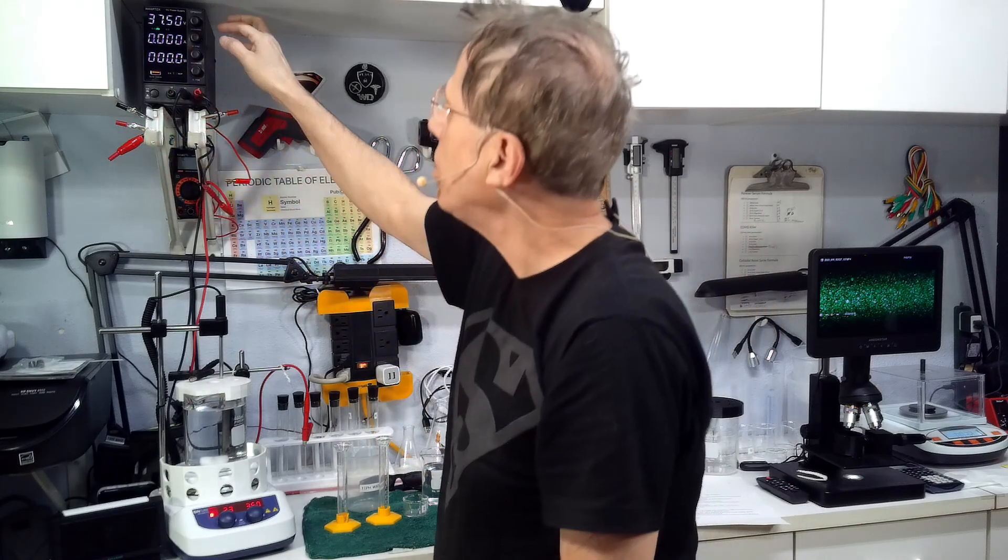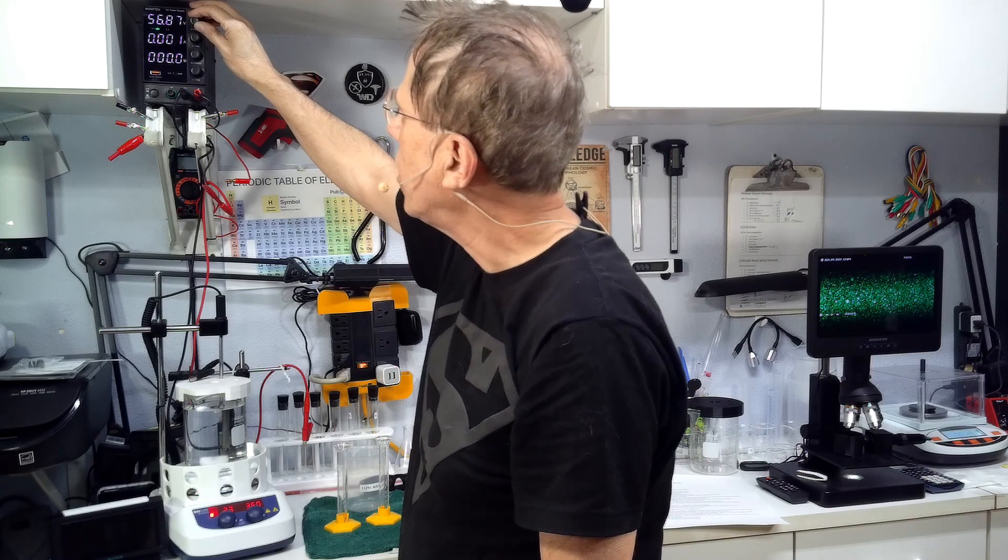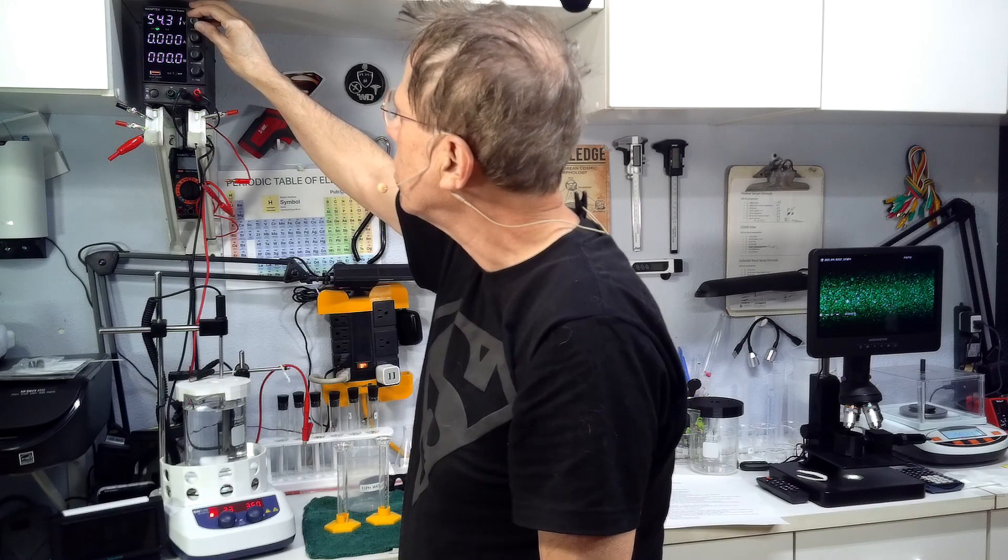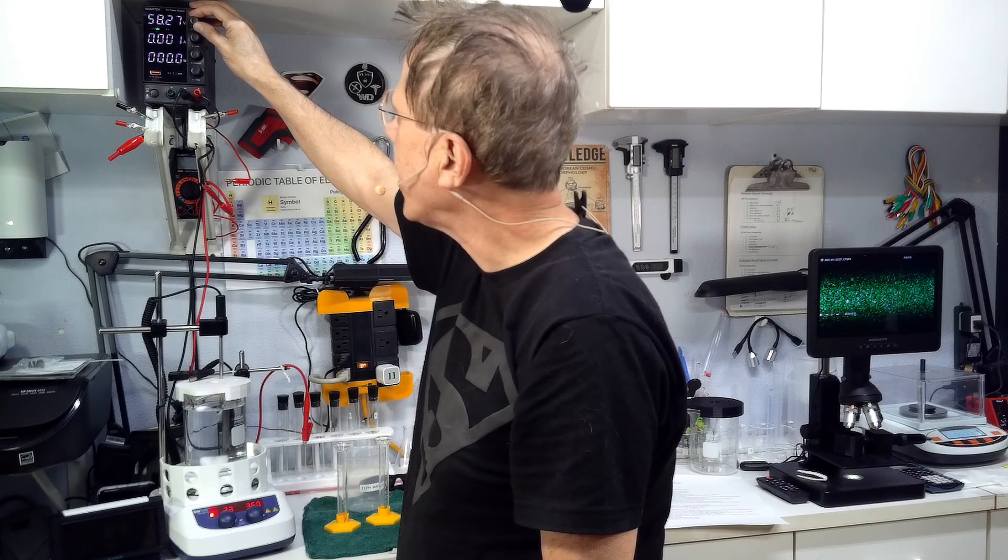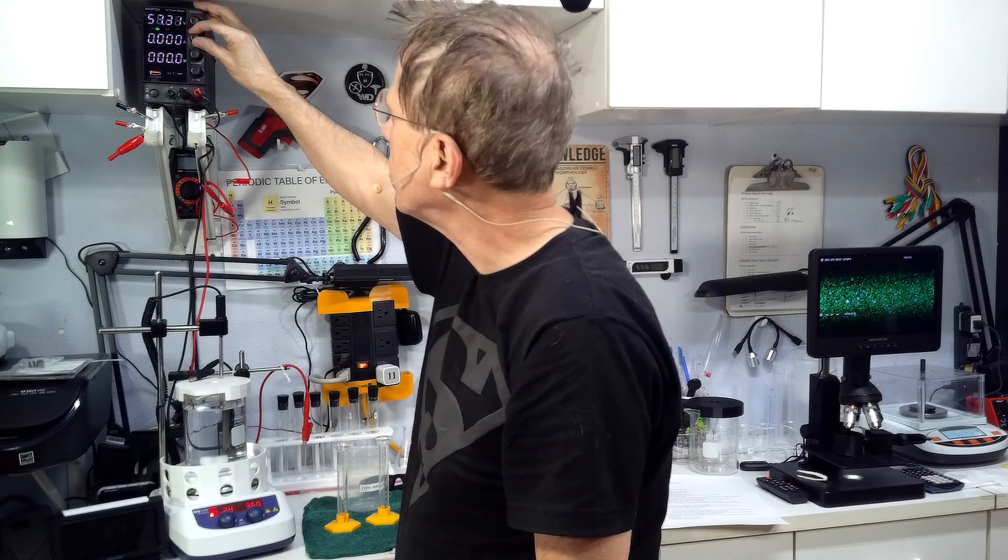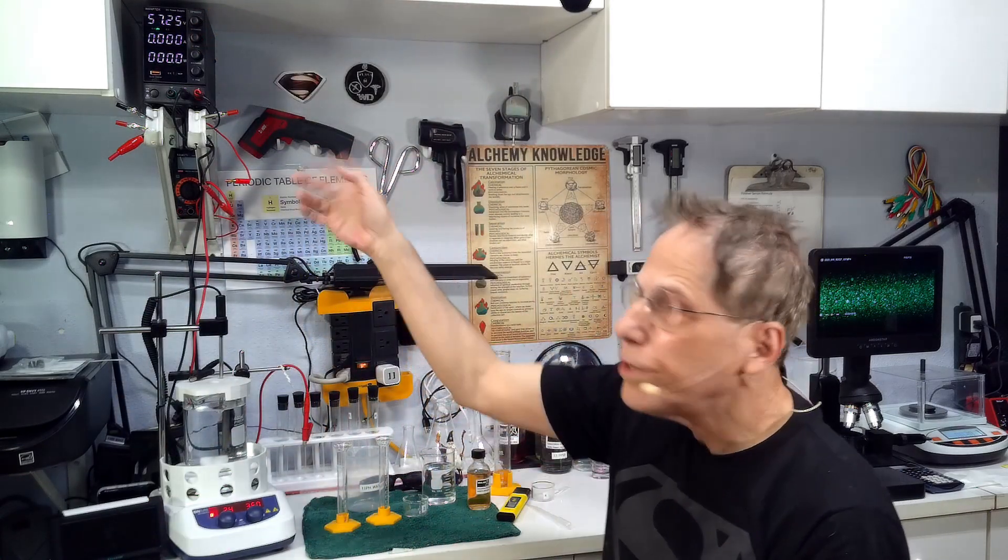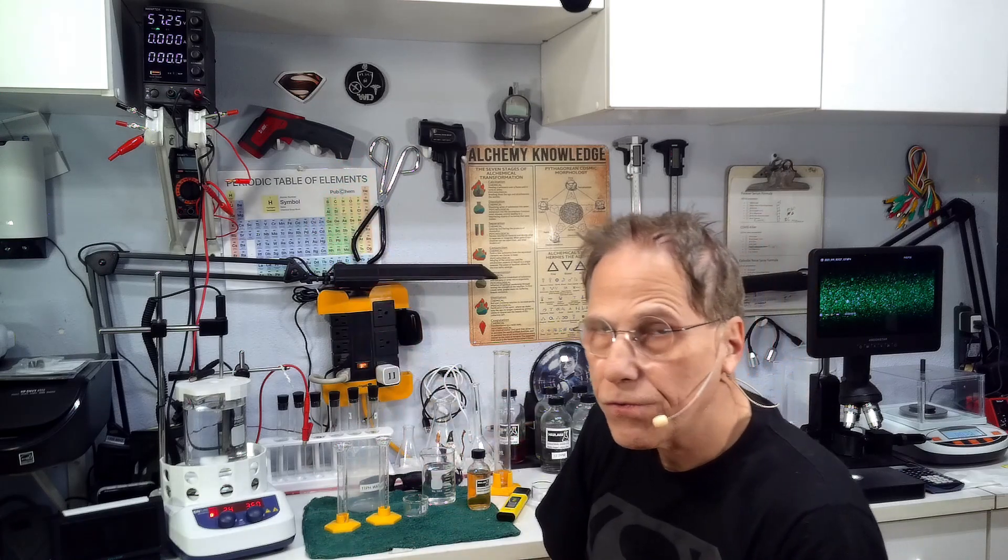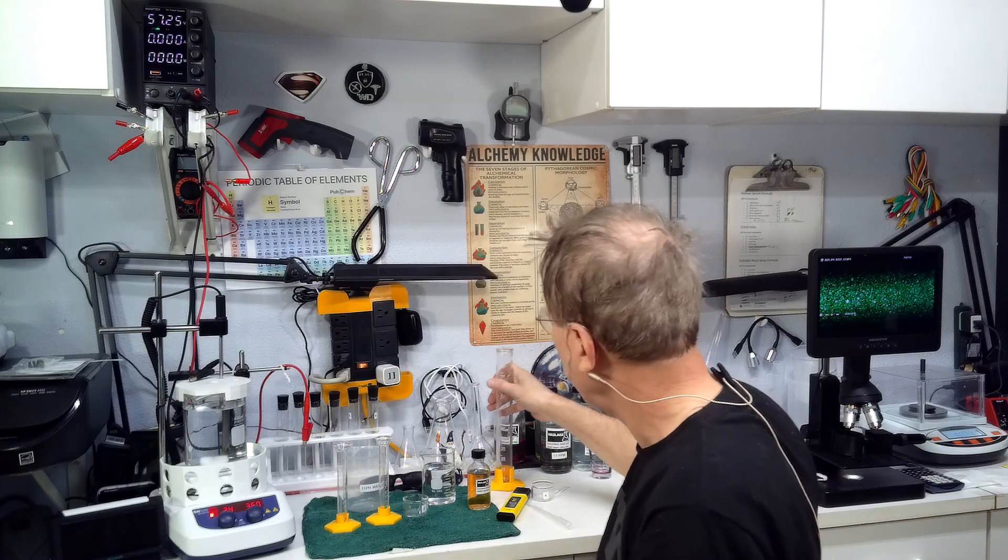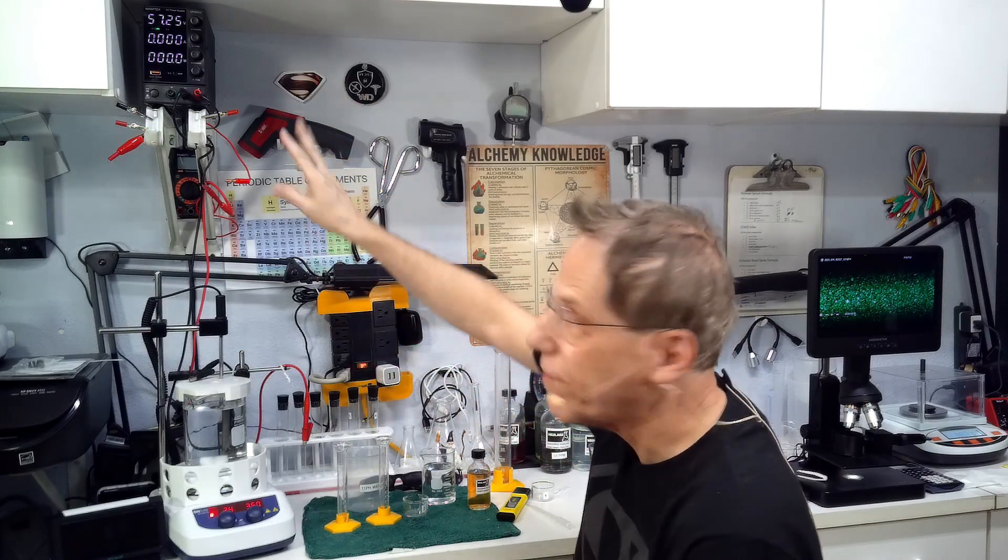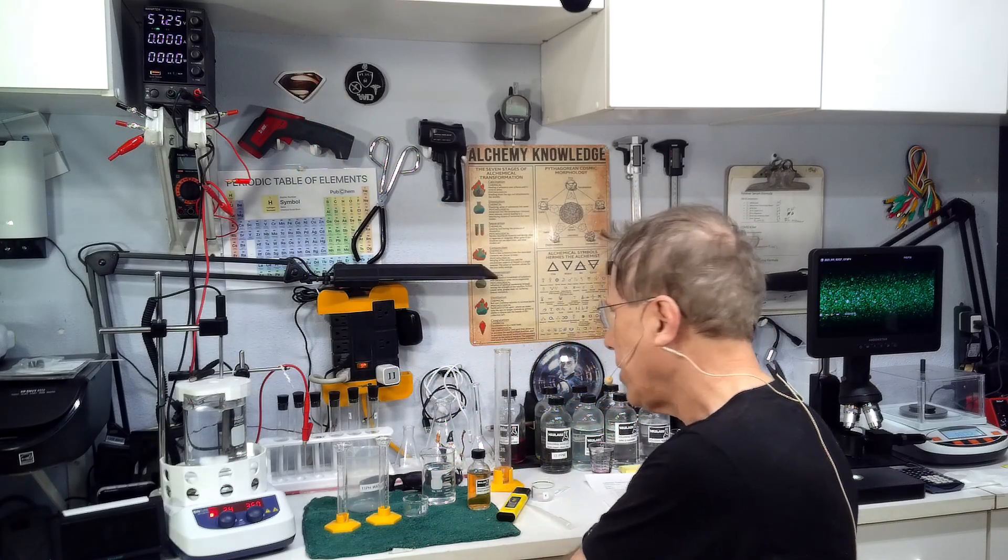For starting up you're going to turn the power supply voltage up to 57 volts. This is a 0 to 60 volt power supply at a maximum of 5 amps. I'm just showing you the voltage to set your thing at.